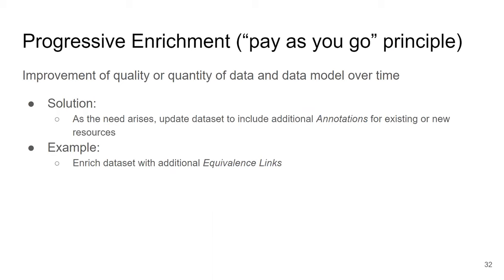In the generic overview of RDF modeling, the pay-as-you-go principle says: start with something small — one class and a few properties — then progressively enrich it in small iterations as you go. This allows you to focus on a small subset of your data first and extend it later. This is an important principle: whenever dealing with linked data, start with something small and then progressively enrich it.